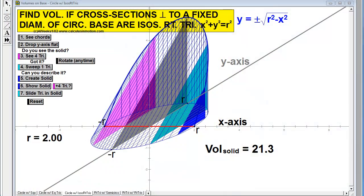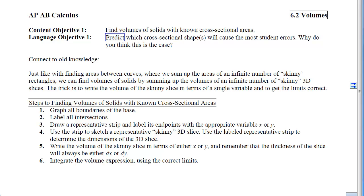The goal is to figure out exactly how we're going to compute the volume. Just like when we found areas between curves — where we sum up the areas of an infinite number of skinny rectangles — we can find volumes by summing up the volumes of an infinite number of skinny 3D slices. The trick is to write the volume of the skinny slice in terms of a single variable and to get our limits correct. To set it up, we have six steps. Step 1: graph all the boundaries of the base, as we did in Section 6.1. Step 2: label all the intersections.